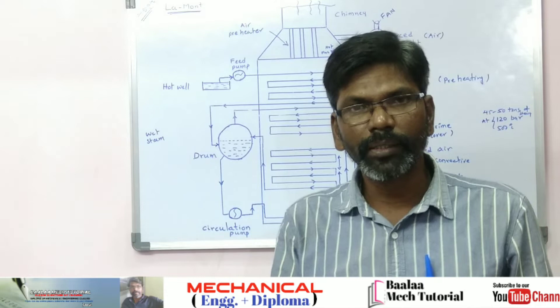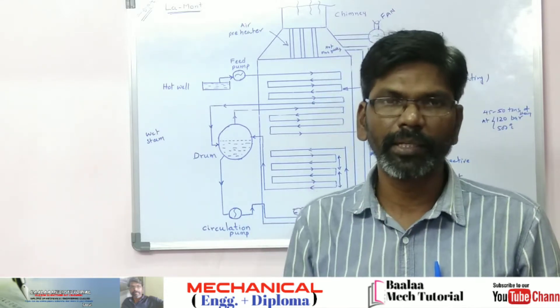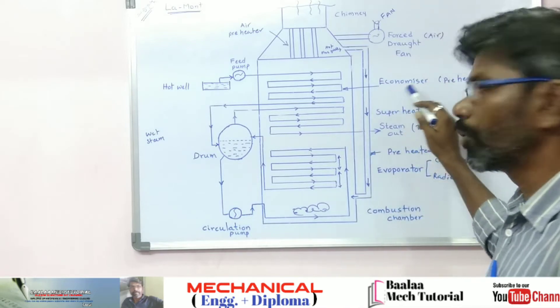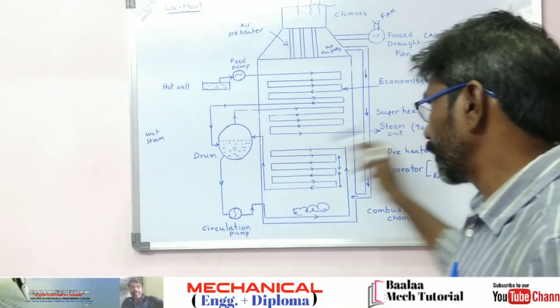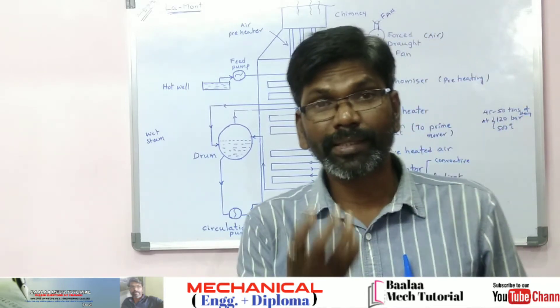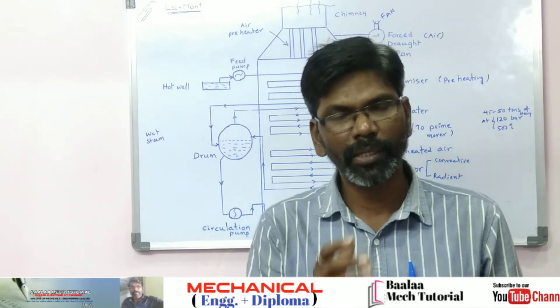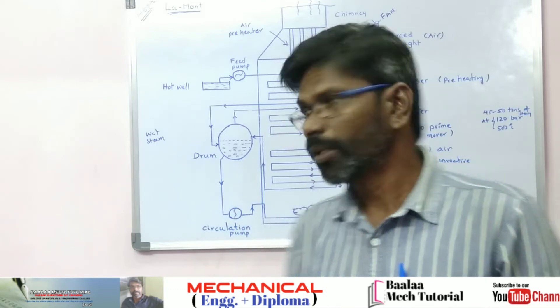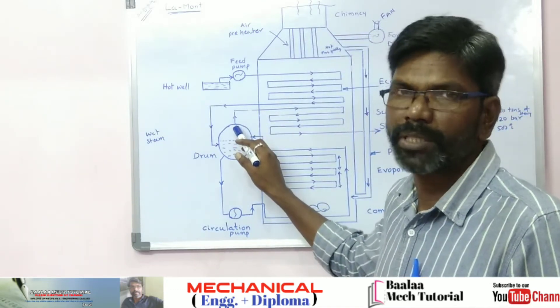Water will pass through the economizer. The economizer collects steam and water. The steam and water collectors feed the source and drum. At the same time, the drum separates water and steam.